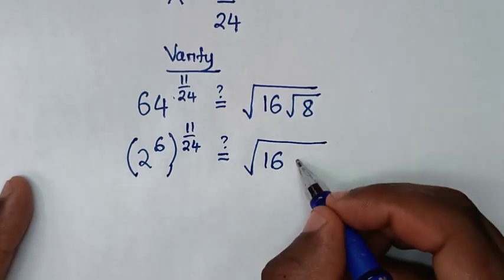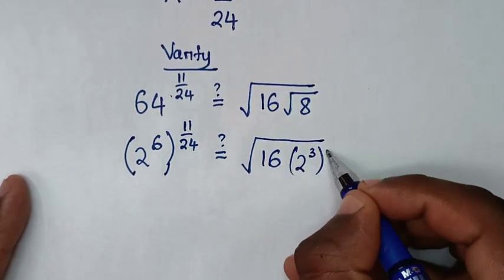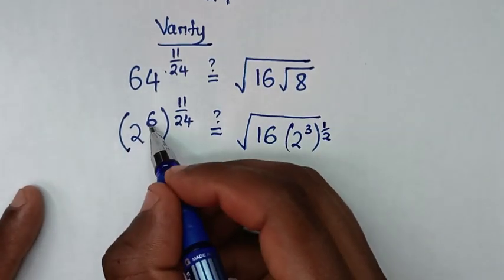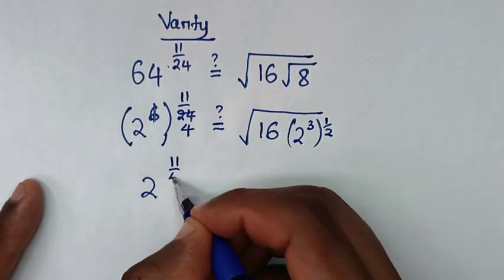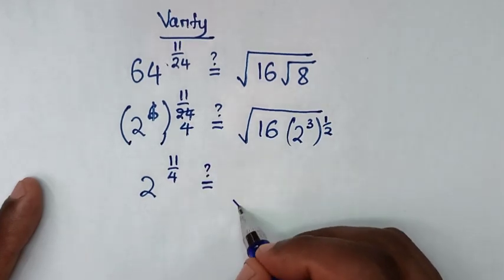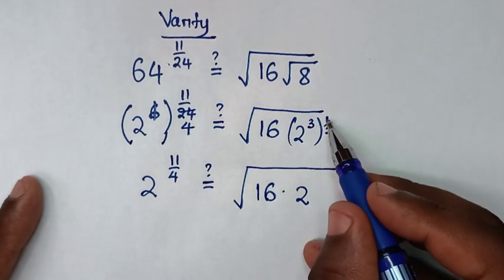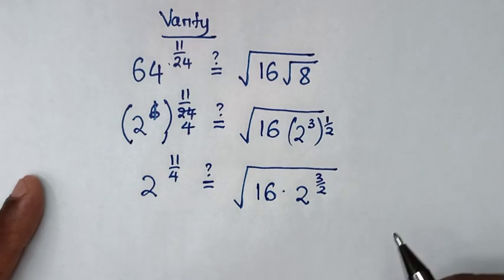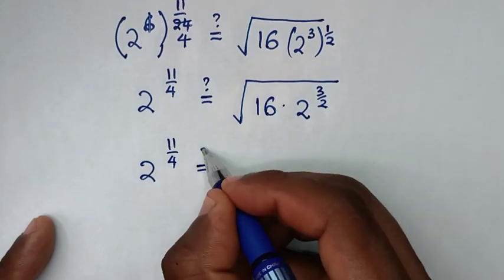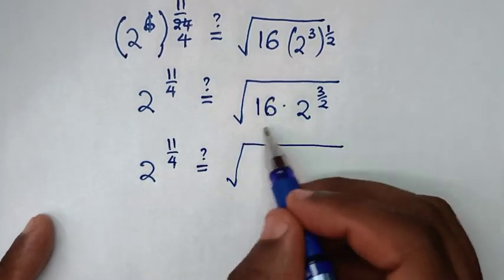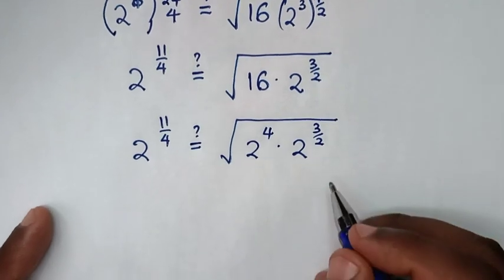The square root is the same as a power of one half. So (2^6)^(11/24) simplifies: 6 times 11/24 cancels to give 2 power of 11 over 4. On the right side, 8 is 2 power of 3, and the square root gives power of 3 over 2. Then 16 is 2 power of 4, times 2 power of 3 over 2.